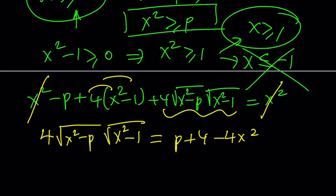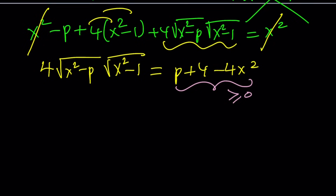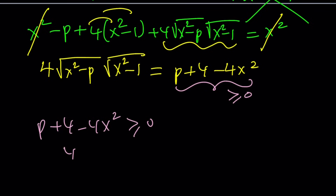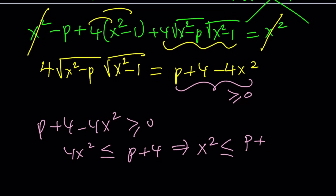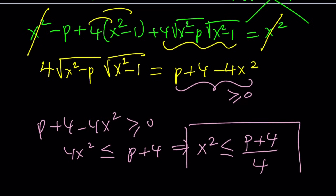Now, the left-hand side is the product of two radicals, which must be greater than or equal to zero. That implies the right-hand side must also be greater than or equal to zero. So p + 4 − 4x² ≥ 0, which gives us 4x² ≤ p + 4, and therefore x² ≤ (p + 4) / 4. That's another condition we need to check.